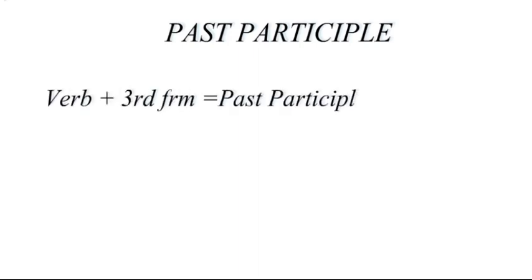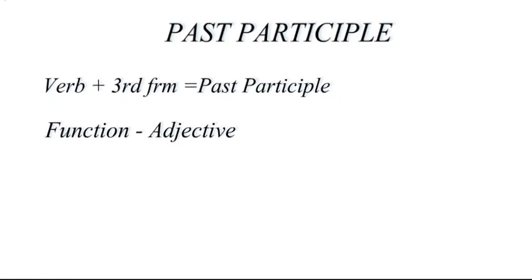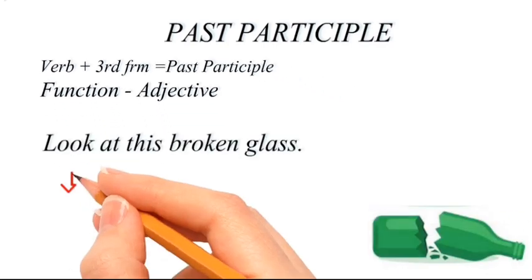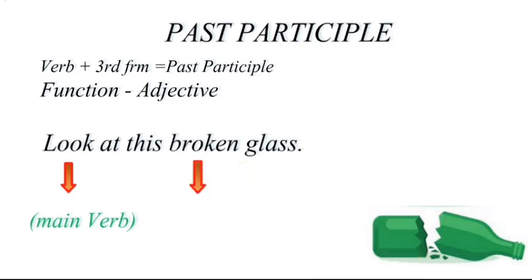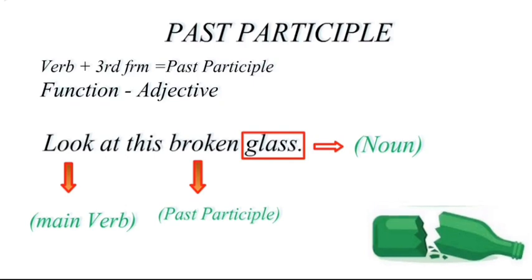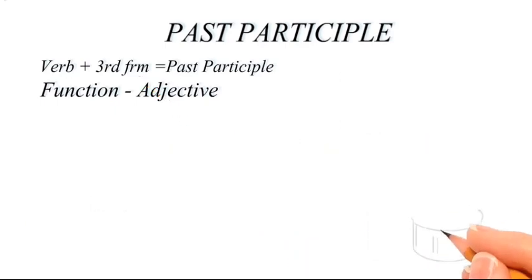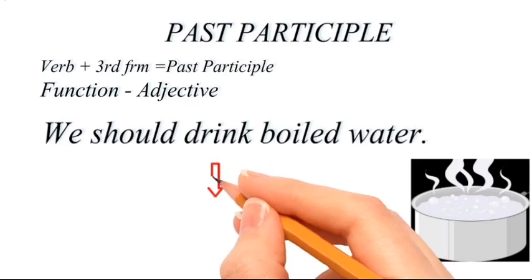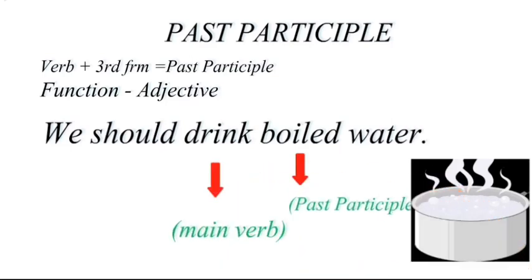Past participle is formed using the third form of the verb and it functions as an adjective. 'Look at this broken glass' — 'look' is the main verb and 'broken' is the past participle describing the glass. 'We should drink boiled water' — 'drink' is the main verb and 'boiled' is the past participle describing the condition of the water. It's the third form of the verb which makes it a past participle.